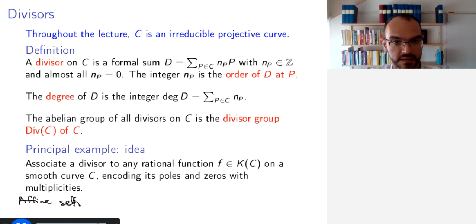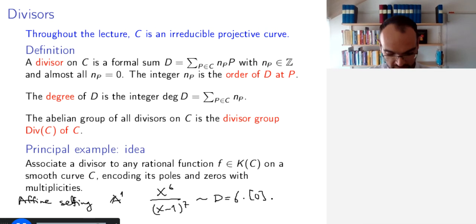So let me for now take A1 and not P1. And let me take the rational function, say x to the power 6 divided by x minus 1 to the power 7. So to this, I want to associate the divisor D, which is 6 times the point 0 minus 7 times the point 1. I'm drawing brackets around the points so that we don't confuse them with the numbers 0 and 1.